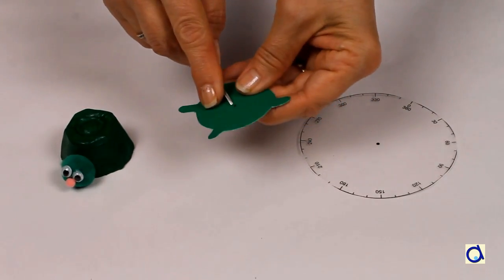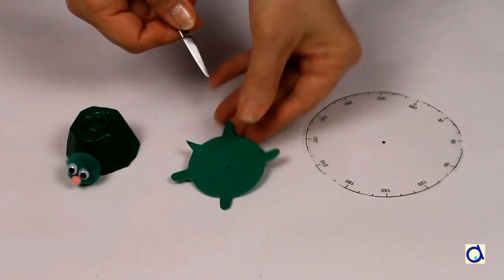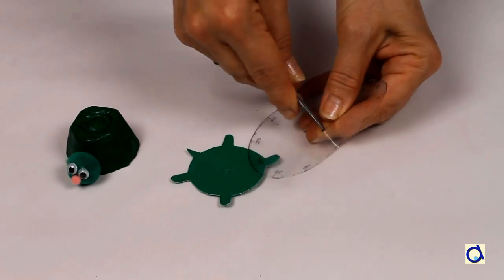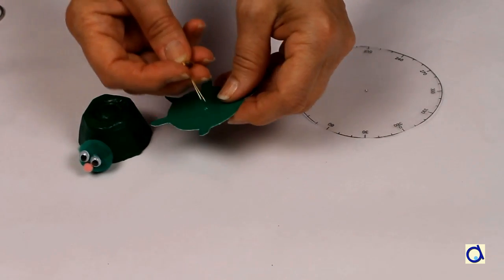Pierce the center of the base of the turtle with small sharp scissors. Also pierce the center of the transparent protractor. Make sure that the protractor is placed with the right side up.